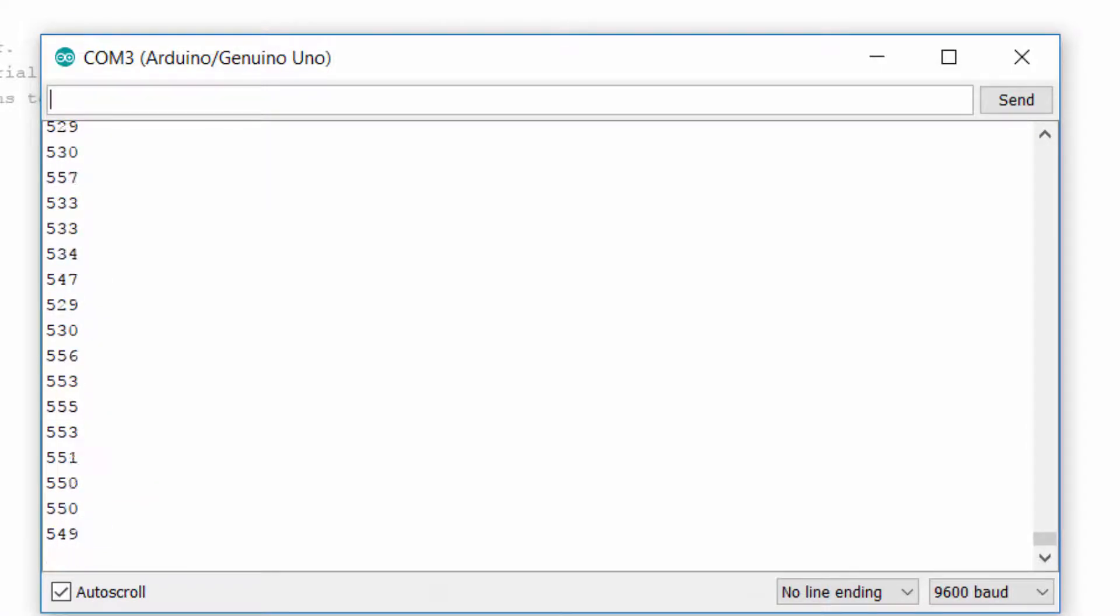And when it is bent, it shows 530 value. Note this value, as we need it to map our servo angles.